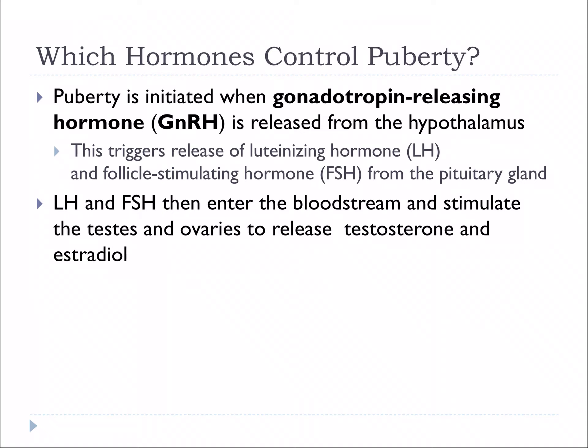Puberty is initiated when GnRH, gonadotropin-releasing hormone, is released from the hypothalamus. GnRH triggers the pituitary gland to release LH, luteinizing hormone, and FSH, follicle-stimulating hormone. These then enter the bloodstream and send the message to the testes and the ovaries to release testosterone and estradiol, initiating puberty and the development of all the secondary sex characteristics.